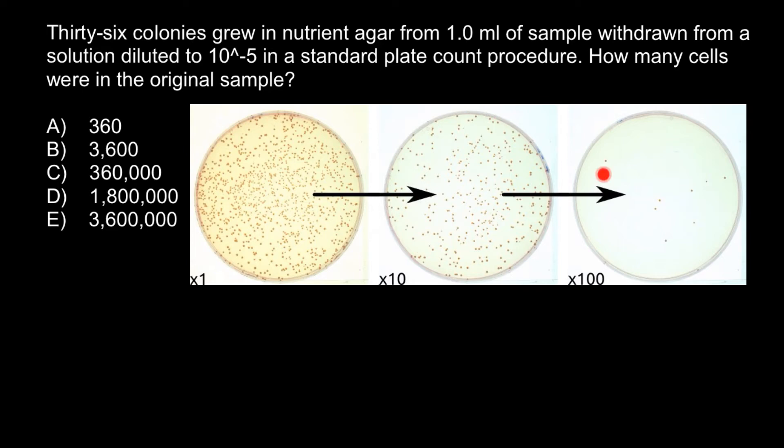Now we can count the number of these colonies, and if we multiply by one hundred, we're going to get roughly the same number of bacterial concentration as in the original sample. Now let's return to our problem.